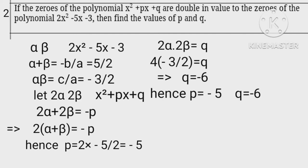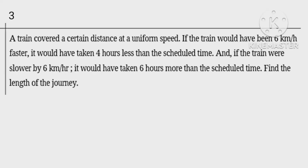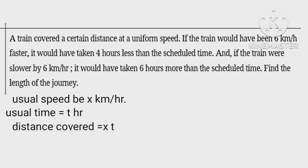Read the question carefully first. Let usual speed of train as x, usual time taken as t. Hence distance covered is equals xt. When speed increased by 6 kilometers per hour, new speed equals x plus 6, time taken equals t minus 4 hour.